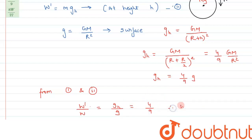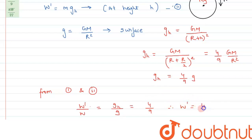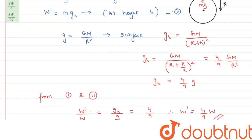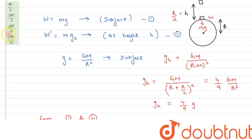Therefore, W' = (4/9) × W. The body will weigh 4/9 times its weight on the surface of the earth. This matches with option C.